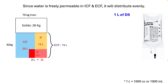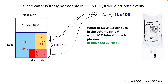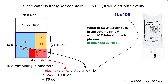Similarly, a liter of D5W will be distributed in both ICF and ECF, as dextrose is used up and water moves freely into all compartments according to their volume ratios. Therefore, the fluid remaining intravascular will be plasma volume divided by total volume, multiplied by the amount of D5 given — and we get approximately 70 cc's. So out of a liter of D5, only about 70 cc's remains intravascular.